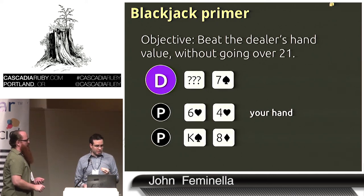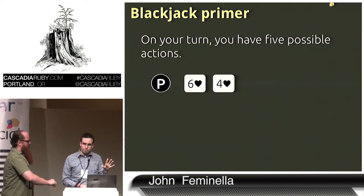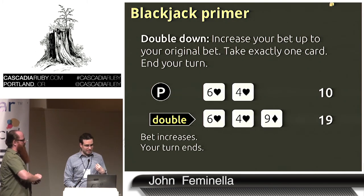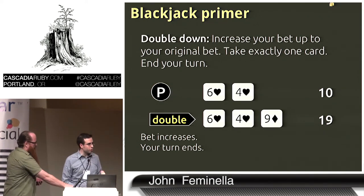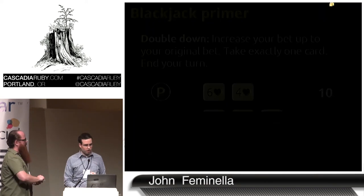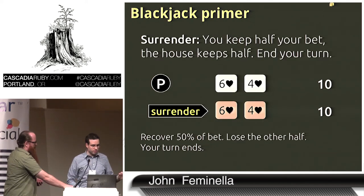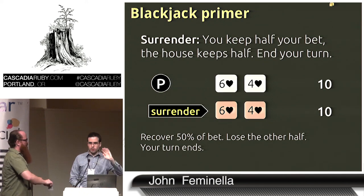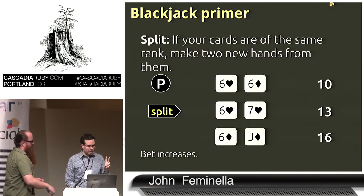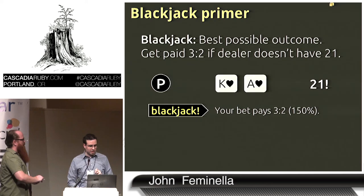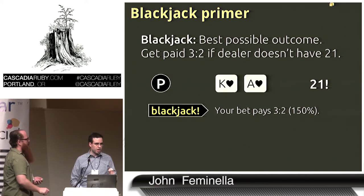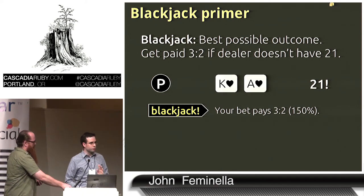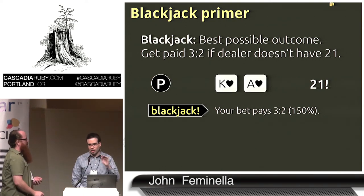Your objective is to beat the dealer's hand without going over 21. You have five possible actions: hit — take another card; double down — double your bet and take exactly one more card; stand — end your turn; surrender if you think the dealer has a better chance of winning, and take half your bet; and split if your two cards have the same rank to make two new hands. The best possible outcome is blackjack — you get paid 150% of your original bet.